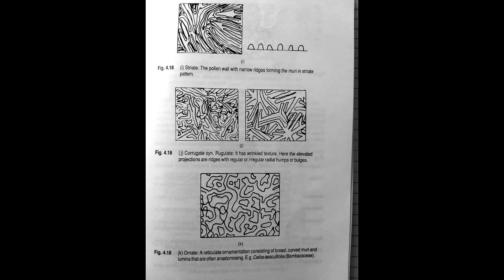Next we have corrugate, also known as rugulate. It has a wrinkled structure, a wrinkle texture. Here the elevated projections are ridges with regular or irregular radial humps or bulges.